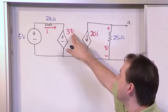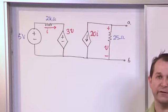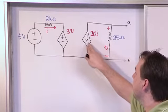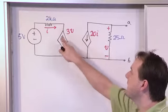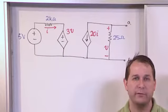The value of this voltage source is 3 times V, where V is defined to be the voltage across this 25 ohm resistor. We also have a current controlled current source. The value of this current source is 20 times I, where I is defined to be the current flowing through that 2k resistor.